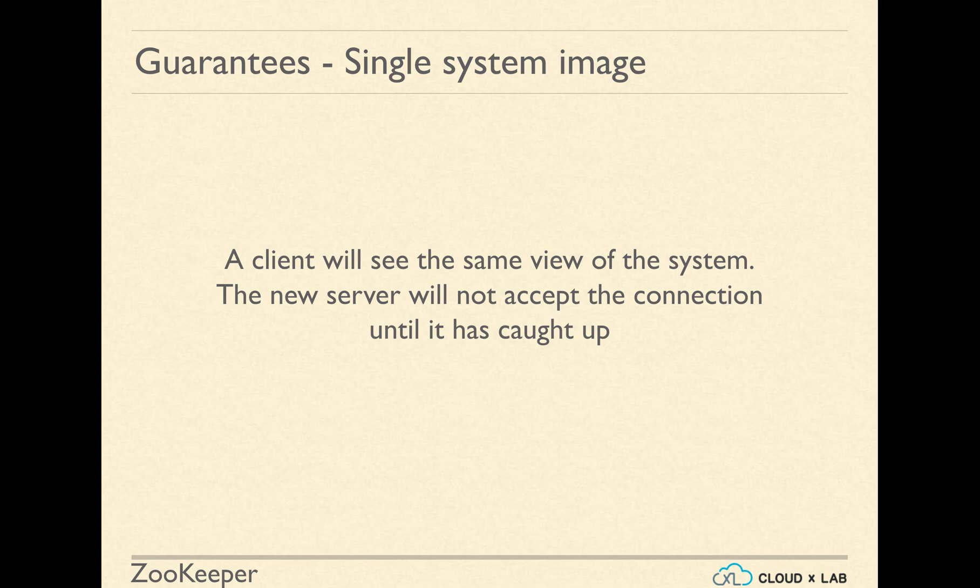A very important feature of ZooKeeper is single system image. It is a guarantee that a client will see the same view of the system. It would not see older data. Let's try to understand what exactly is a single system image in ZooKeeper with an interaction diagram.